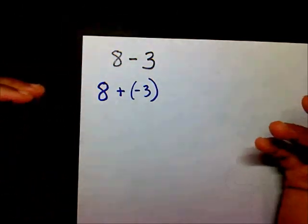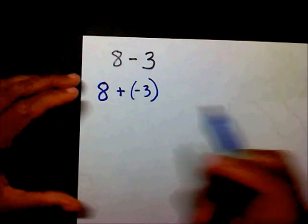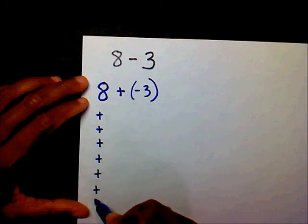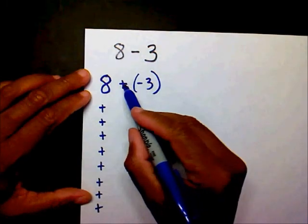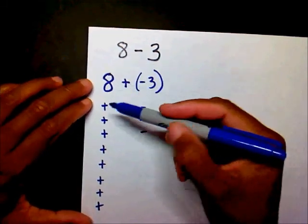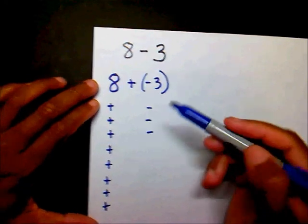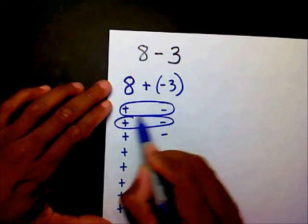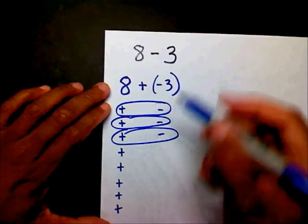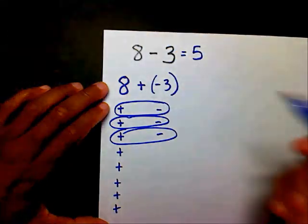And then we'll use what we learned in the adding integers video. 1, 2, 3, 4, 5, 6, 7, 8, and we want to add 3 negatives. So, 8 plus negative 3. I have 8 positives and 3 negatives. I have my zero pairs here. And that leaves me with 1, 2, 3, 4, 5. So, 8 minus 3 is 5.